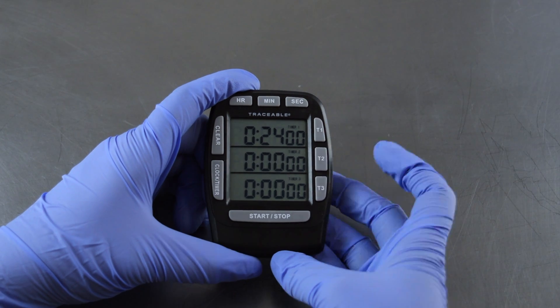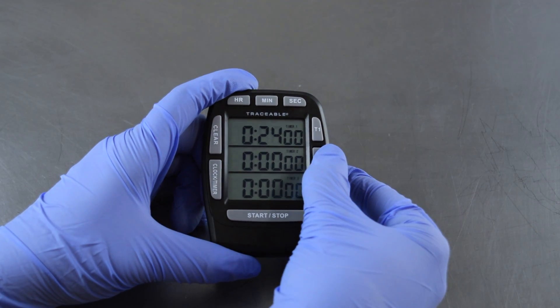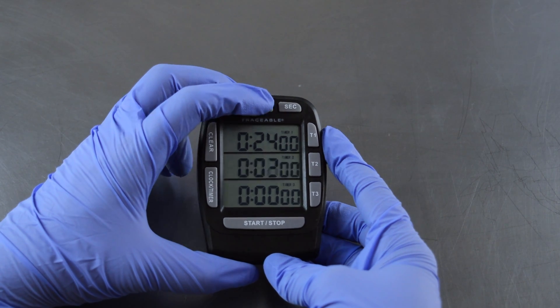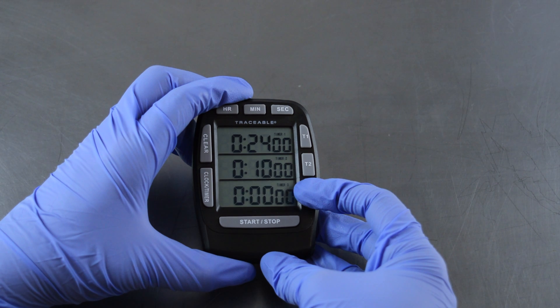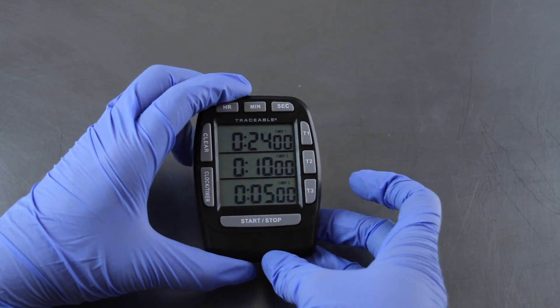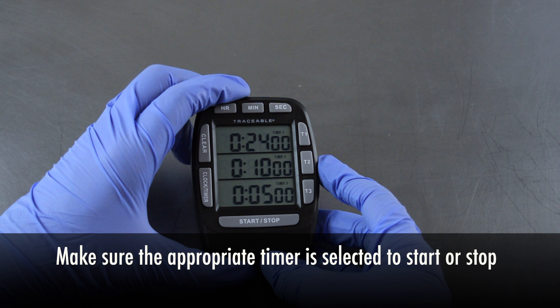To set timers 2 and 3, repeat the steps again. Hold down on T2 until the numbers flash and then set the appropriate time. Repeat this process again for T3. Make sure the appropriate timer is selected when starting or stopping the timer.